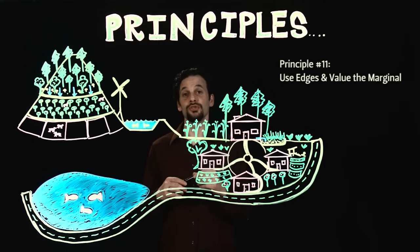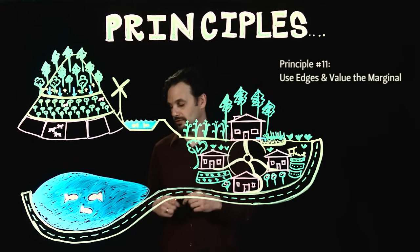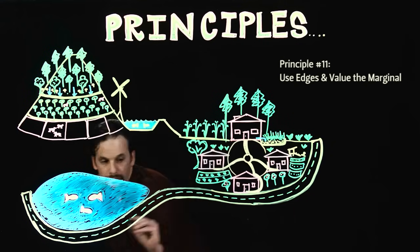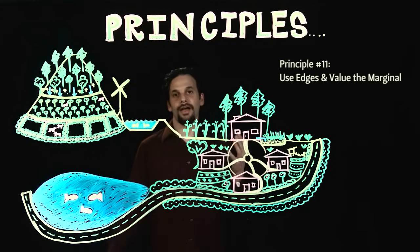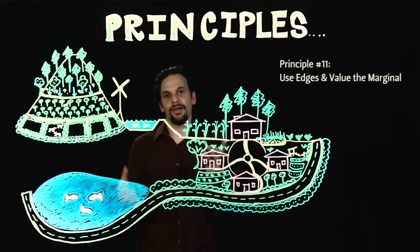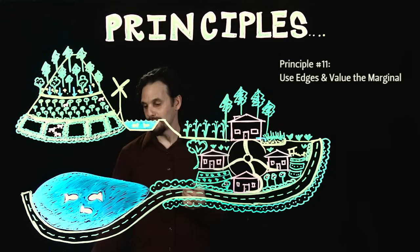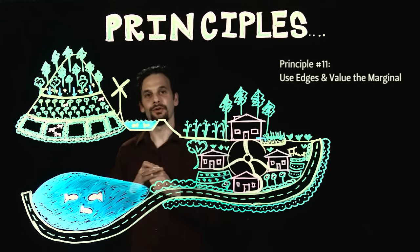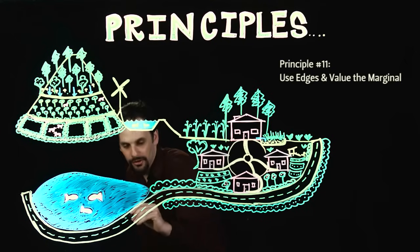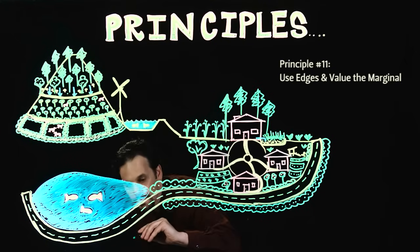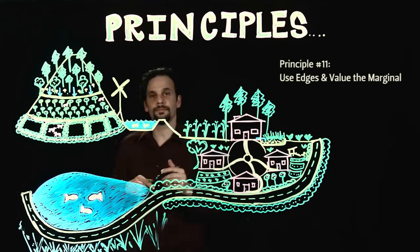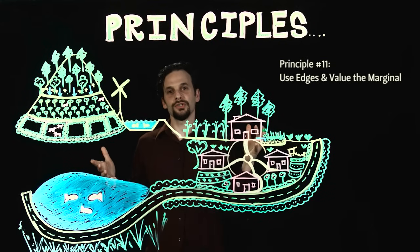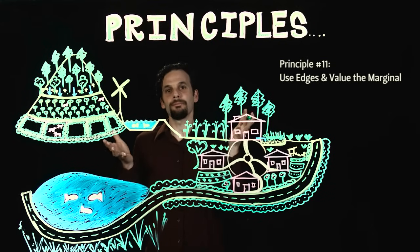Principle 11 is Use Edges and Value the Marginal. I've added edible hedgerows around the animal paddocks and along the road. I've also added bamboo down below the pond, which will be sub-irrigated by water that seeps down. The edges and margins are great locations to add more productive space.